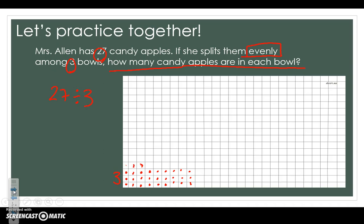1, 2, 3, 4, 5, 6, 7, 8, and 9. So we know that there are nine groups of 3 in 27, giving us our answer of 27 divided by 3 equals 9.